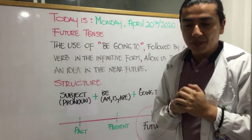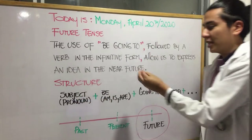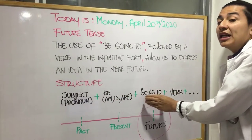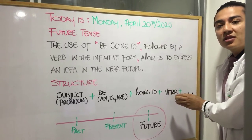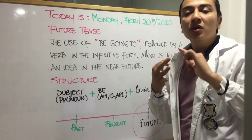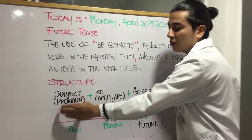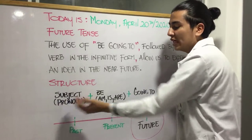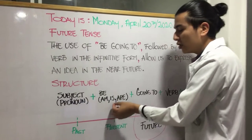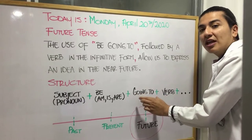So what is the structure exactly — how does it work? We have to use the subject or pronoun, plus the verb to be — which is am, is, or are — plus going to, plus the verb in the infinitive. Remember the pronouns in English: I goes with am, he or she goes with is, and you, they, or we goes with are.